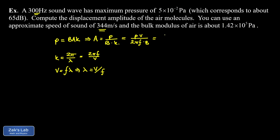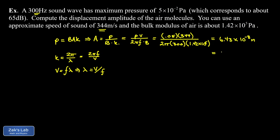Plugging in: pressure amplitude = 0.05 Pa, speed of sound = 344 m/s, frequency = 300 Hz, bulk modulus = 1.42 × 10⁵ Pa. Running the numbers to three significant figures gives about 6.43 × 10⁻⁸ meters, or 64.3 nanometers. This is a surprising result — a 65 decibel sound is a pretty ordinary, easily audible sound level, yet the actual physical wiggling of the air molecules is measured in nanometers, so the amplitude of those oscillations is incredibly small.